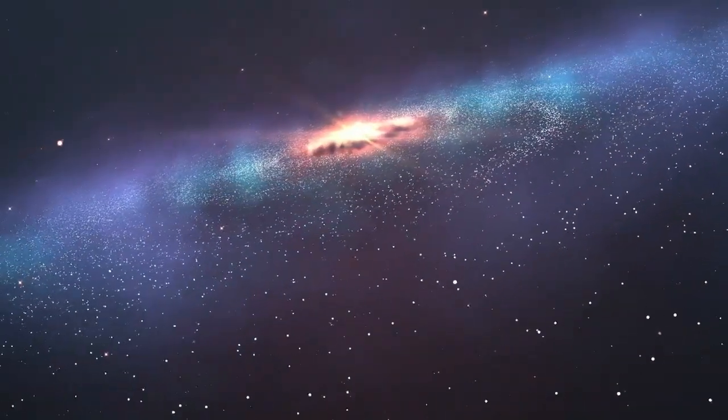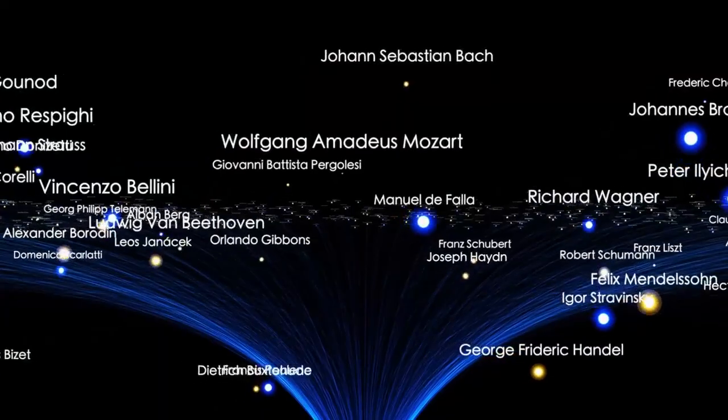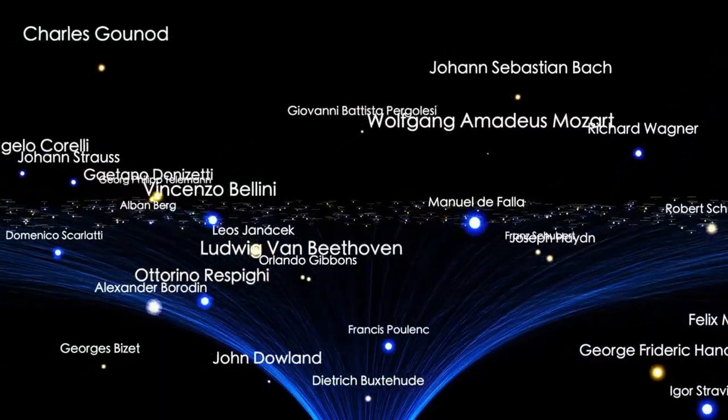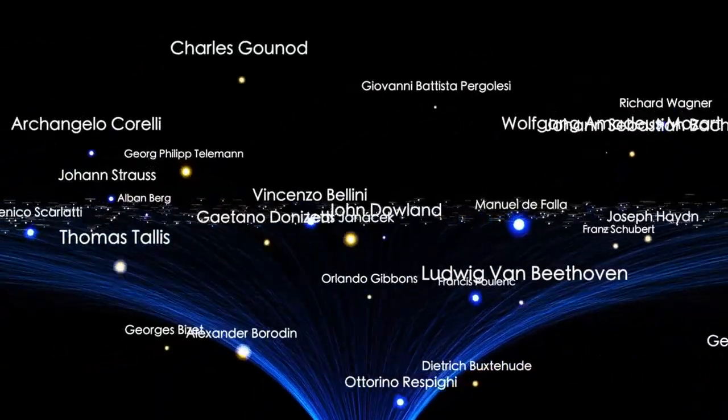And it wasn't alone. Webb kept uncovering more. Across vast regions of the sky, multiple galaxies appeared, each showing complexity and maturity that shouldn't have been possible. This wasn't a glitch in the telescope. The instruments worked flawlessly. The problem wasn't the data. The problem was our theories.